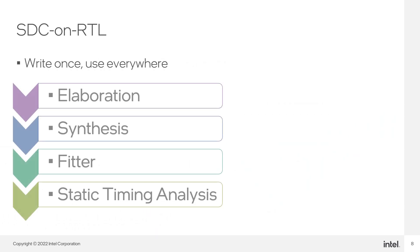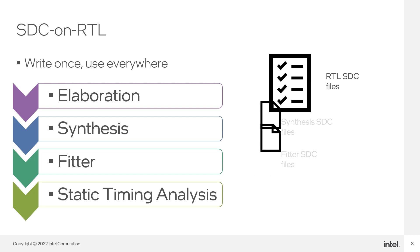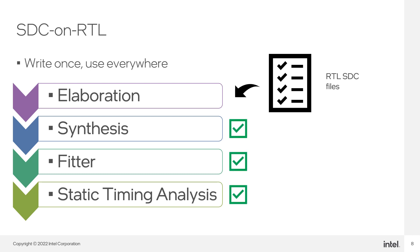Constraints applied via SDC on RTL can constrain a design throughout the entire compilation flow. As compilation progresses, the compiler keeps the constraint targets updated. This can eliminate the need to have separate SDC files for synthesis or fitter stages, enabling a write-once-use-everywhere methodology for constraints. However, it is still possible to include additional SDC files during the synthesis or fitter stages to complement or override the constraints defined via SDC on RTL.